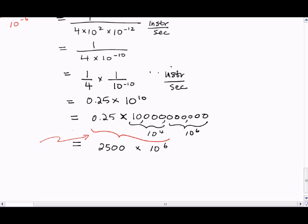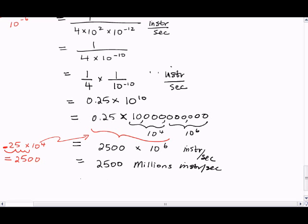So how did we get that? Well, this was 0.25 times 10 to the 4th. We move the decimal point to the right 4 spaces, 1, 2, 3, 4. So we have 2,500. So now we have 2,500, 10 to the 6th is millions of instructions per second.